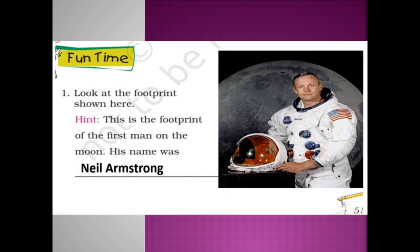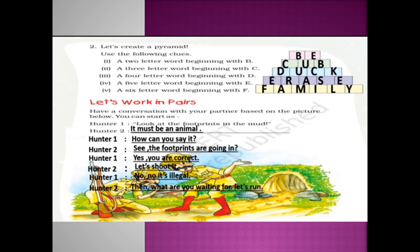Next, let's create a pyramid using the following clues: a two-letter word beginning with B, a three-letter word beginning with C, a four-letter word beginning with D, a five-letter word beginning with E, and a six-letter word beginning with F. All the words I have created are on my own — you can write anything that is fine.